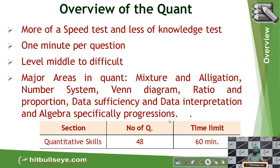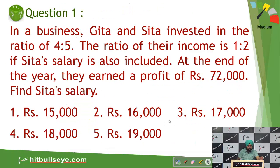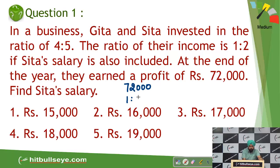Now we'll look at a few actual quant questions from the last two to three years. In between, I'll solve a few questions for you and a few are left for your reference. The first question involves Gita and Sita — their ratio of incomes is given. At the end of the year they earned a profit of rupees 72,000 in the ratio of one is to two, so we break 72,000 to get 24,000 and 48,000.